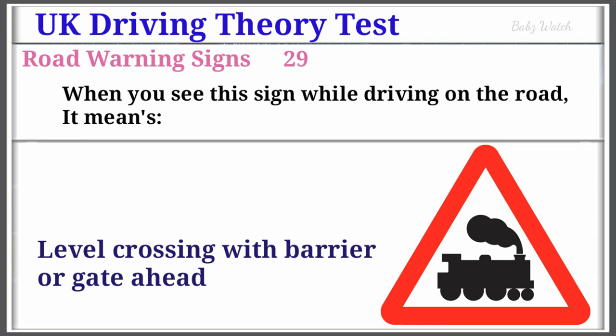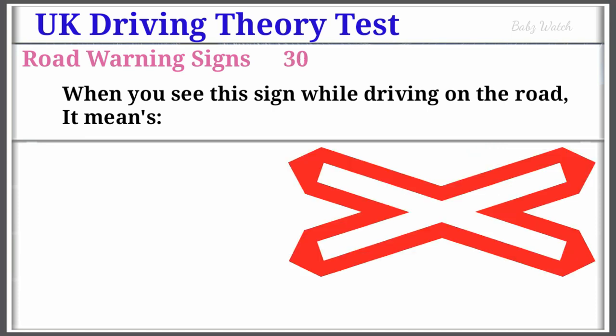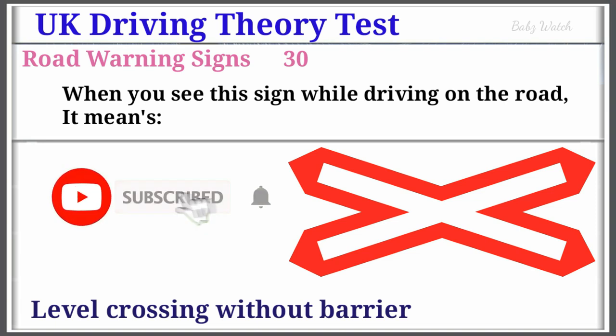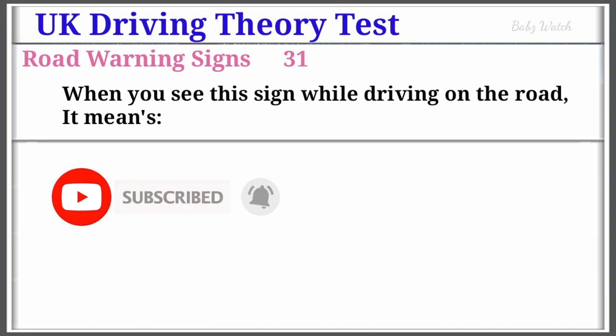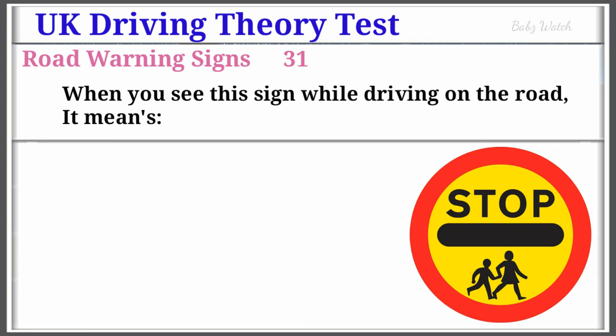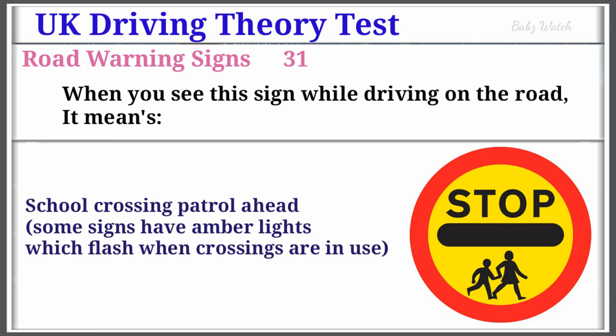UK Driving Theory Test Road Warning Sign Number 30: When you see this sign while driving on the road, it means Level Crossing Without Barrier. Warning Sign Number 31: When you see this sign while driving on the road, it means School Crossing Patrol Ahead. Some signs have amber lights which flash when crossings are in use.